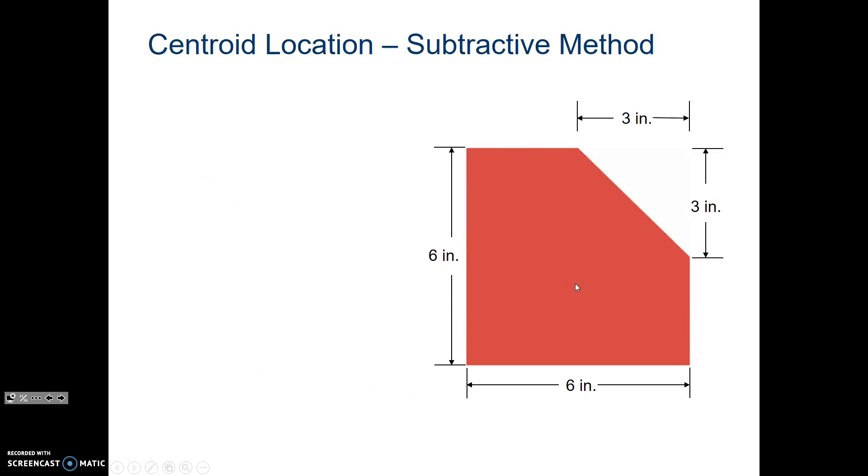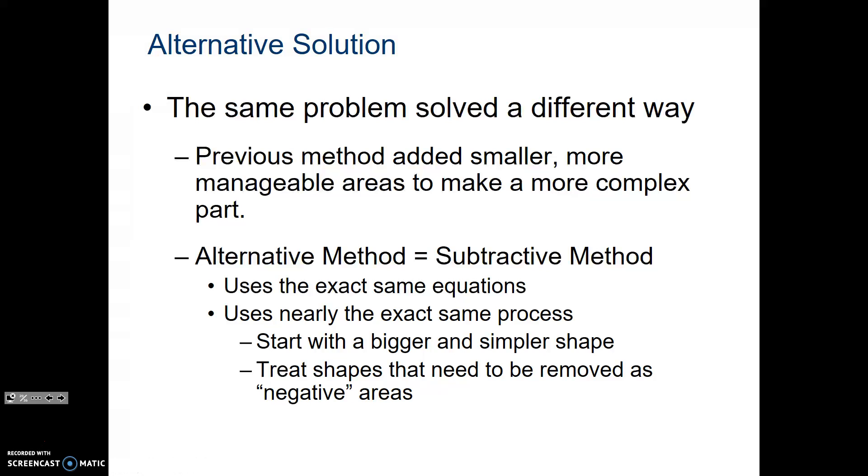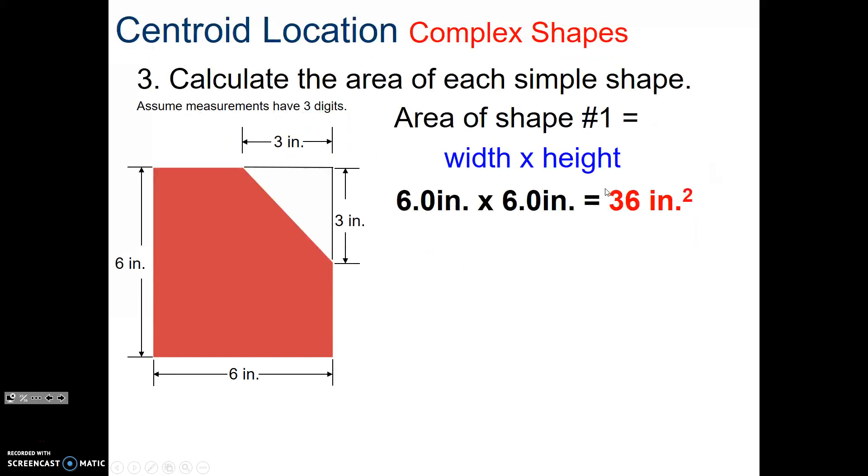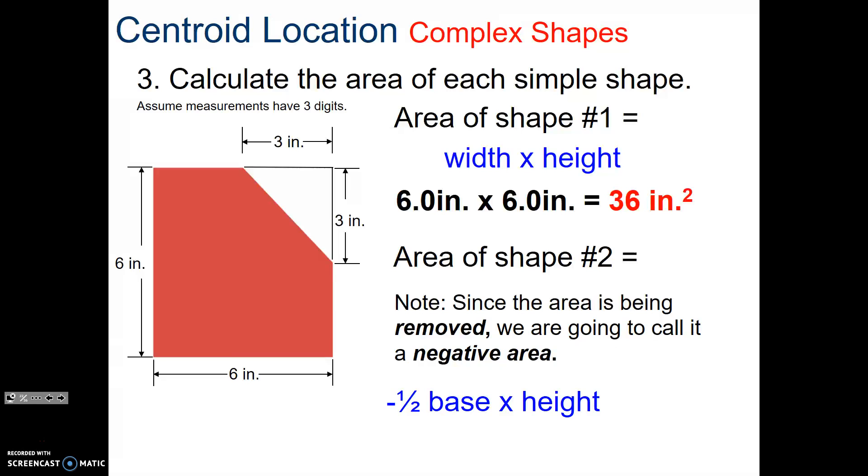Another way we can do it is by using subtractive. What we did was we did additive, where we added the shapes. Now, what we can do is, if it's even easier, is you can do the negatives. We're going to subtract it. We're going to take the area of the imaginary box and subtract the triangle. And we do the exact same thing, where we get all the area of the full shape, even this little white here. And we then remove this. But removing is a negative sign. So, the area is a negative area. We're subtracting that area out.